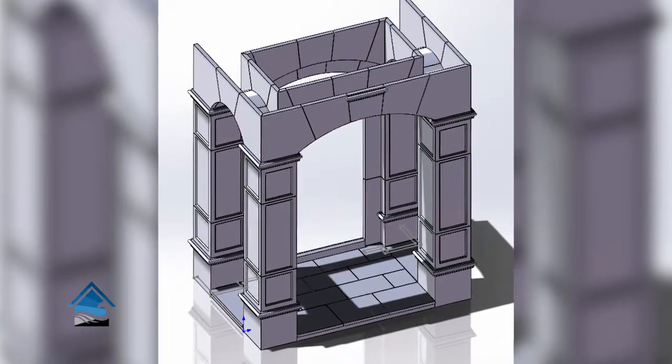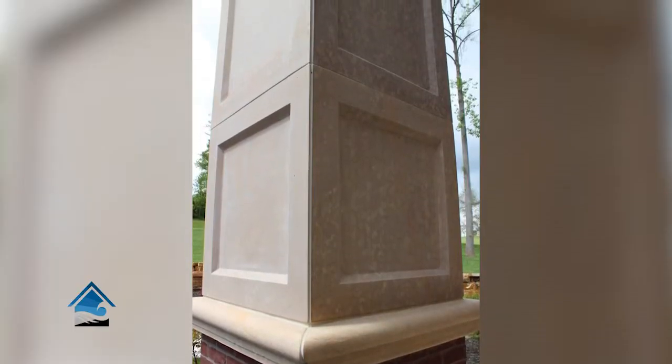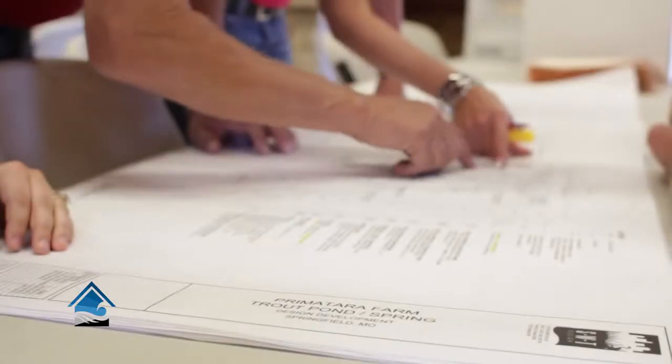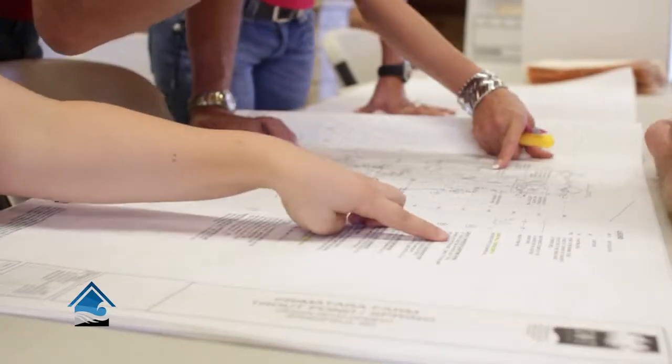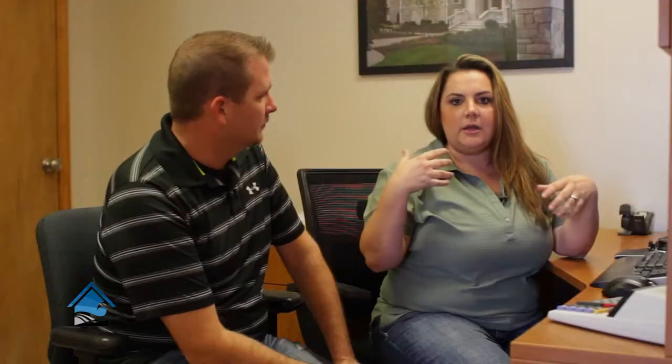they send it back to us to ticket it for the shop to fabricate. At that point, we generate a setting print, which numbers every single piece of stone on the drawing to ensure a seamless installation and they know exactly where we plan on every piece of stone going.